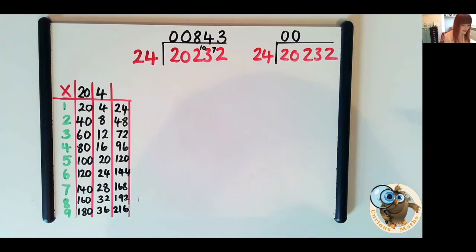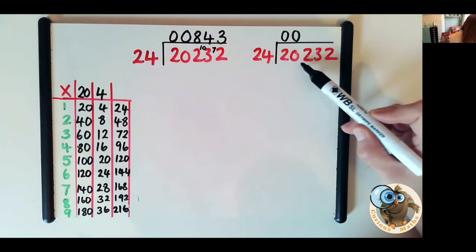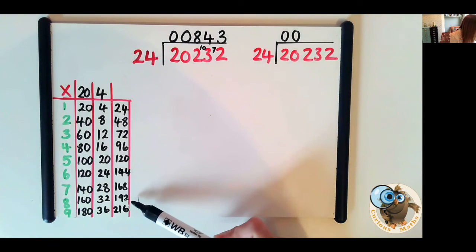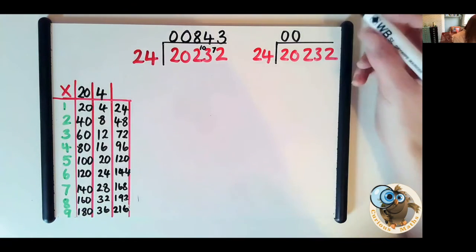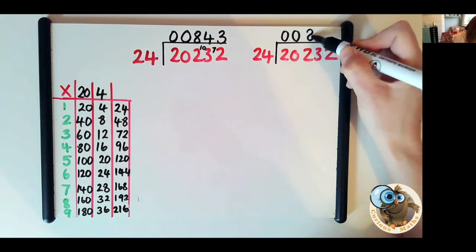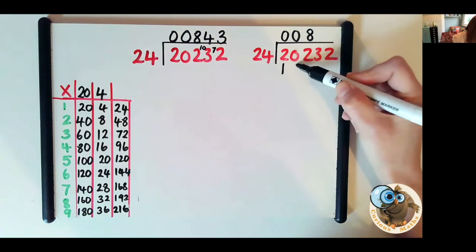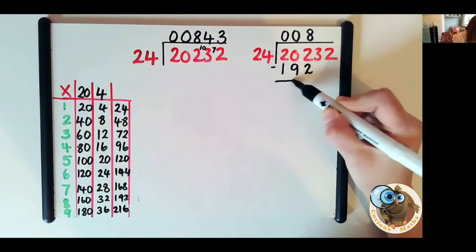How many 24s in 202? So we look in our chart and we can see that 8 24s is the closest because nine is too many. So 8 24s is 192 and we write that 192 underneath and we take it away.